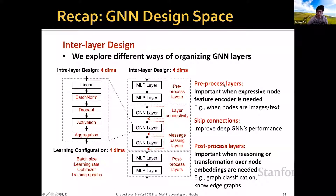The intuition of adding pre-processed layers is that it could be pretty important when expressive node feature encoders are needed. For example, when our nodes are extracted from images or text, we'd consider using convolutional neural networks or transformers to encode these node features. We may also add post-processed layers after applying graph neural network computation, which are important for reasoning over node embeddings — for example, graph classification or knowledge graph applications.